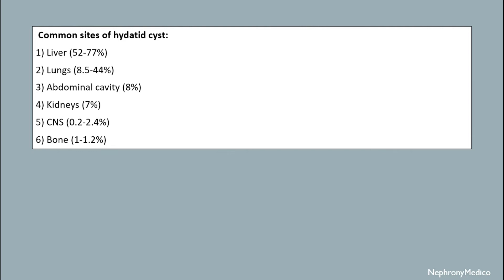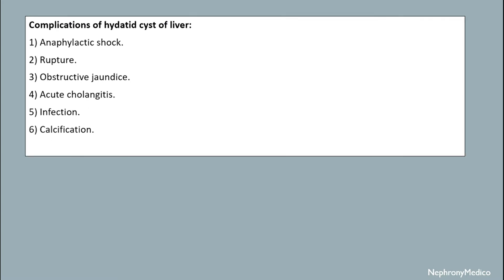Common sites of hydatid cyst are the liver, lungs, abdominal cavity, kidneys, CNS, and bone, with the most common site being the liver at about 52 to 77 percent. Complications of hydatid cyst of the liver include anaphylactic shock, rupture, obstructive jaundice, acute cholangitis, infection, and calcification.